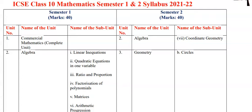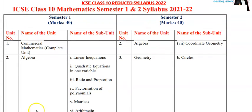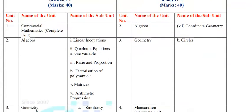Semester 1 has a total of 40 marks. The first unit is Commercial Mathematics — the complete unit is retained. Commercial Mathematics complete unit is there, and then coming back to Algebra — in this complete unit, Shares and Dividends are deleted.